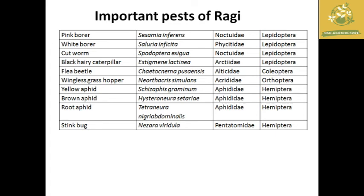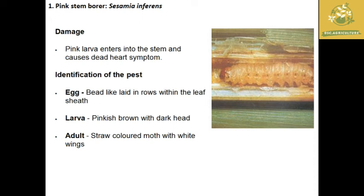Next, we are going to see the important pests of ragi. This table lists the important pests present in ragi. The first pest is the pink stem borer, Sesamia inferens. The damage is caused by pink larvae found inside the stem, causing dead heart symptoms. For identification: eggs are laid in rows within the leaf sheath in a weed-like structure; the larva is pinkish with a dark brown head; the adult is a straw-colored moth with white wings.